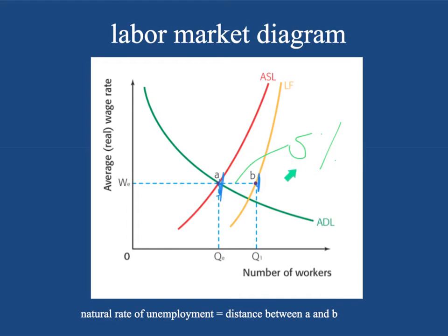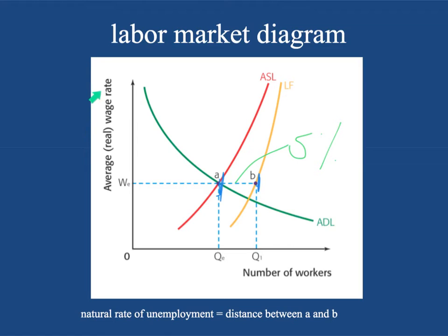On the vertical axis you have the average real wage rate, which is representative of the aggregate wage rate for all wage earners — it could be teachers, assembly line workers, salespeople, people delivering pizza, motorcycle mechanics, bankers, whatever job you think of. This is the average real wage rate. And down here on the horizontal axis is the total number of workers.